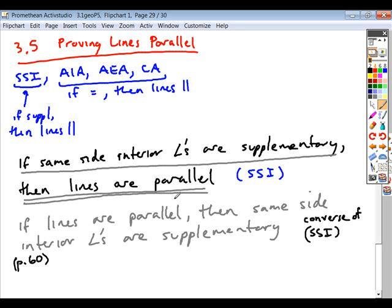And so the same is true here. If lines are parallel, then alternate interior angles are equal. If lines are parallel, then alternate exterior angles are equal. If lines are parallel, then corresponding angles are equal. So the converse of each of those will also hold true.